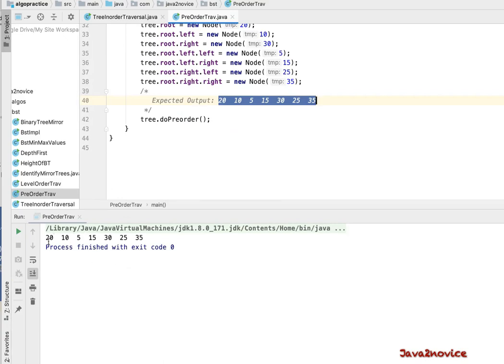As expected, it's matching with expected output: 20, 10, 5, 15, 30, 25, 35.